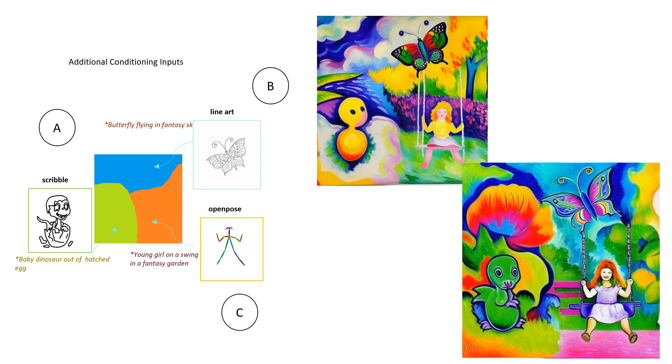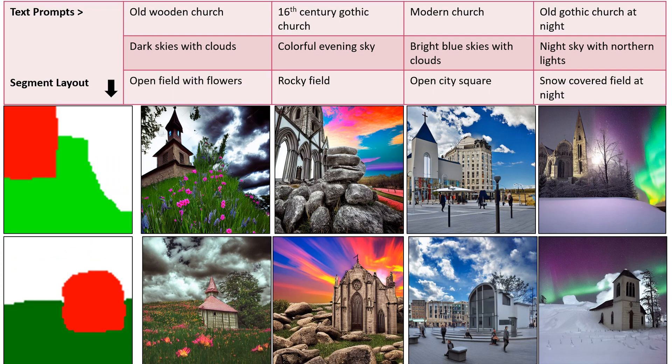You can extend Composite Diffusion to support many kinds of control conditions, including scribble, open pose, and line art, which are fed to different segments along with the textual description, and then finally you create a composite from it. Once you have the ability to change the layout, the descriptions, or the control conditions, you can create a variety of outputs — helping the artist produce at scale both for customization and variety.